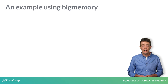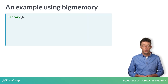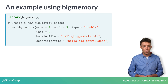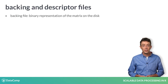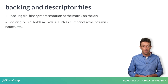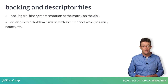Here's the first example of creating a big matrix object. First, we load the bigmemory package using the library function. Then we create a big matrix object. The six parameters specify the number of rows, number of columns, the type of elements the big matrix will hold, the initial value for all elements of the matrix, the name of the backing file, and the name of the descriptor file. The backing file holds the binary representation of the matrix on the disk. The descriptor file holds other information about the big matrix, like the number of rows, number of columns, type, and column and row names, if there are any.